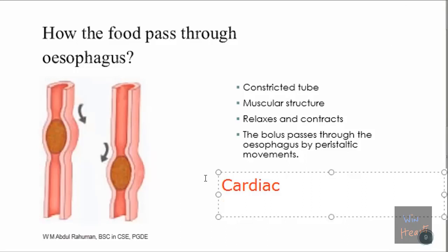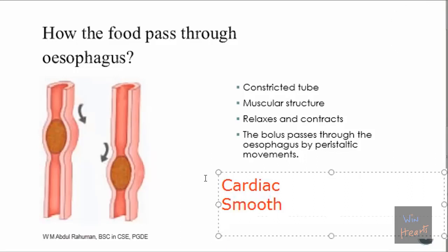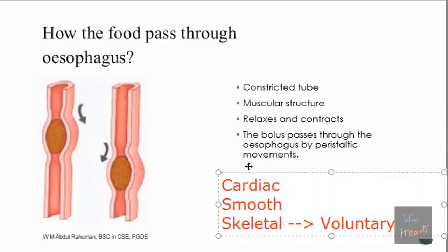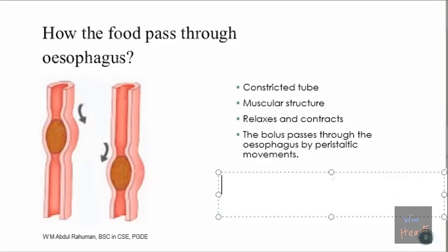Out of these three, cardiac and smooth are involuntary, while skeletal is voluntary. The reason I want you to remember this is to ask: what type of muscle do you find in your esophagus? It is smooth muscle. Because if it were skeletal, you would need to consciously control what you eat, which we can't do.